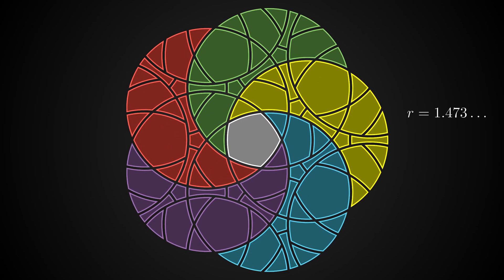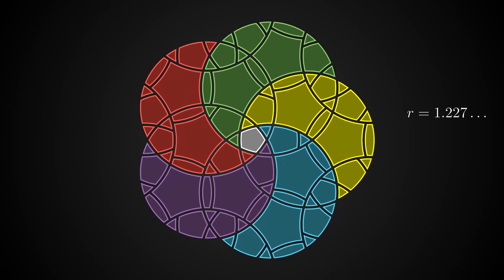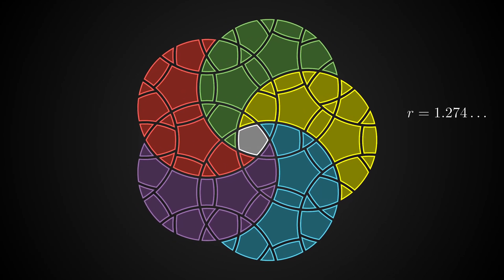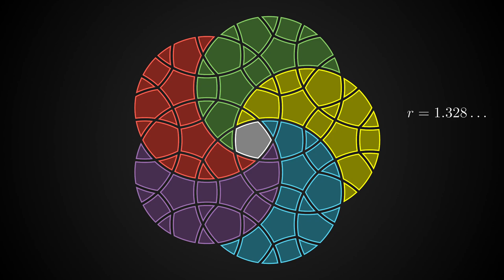However, I chose the radius where the sides of the puzzle pieces align best. This radius turns out to be, pause here if you want to work it out yourself from scratch, square root of (4 minus square root of 5).